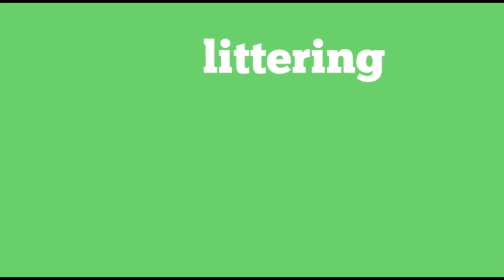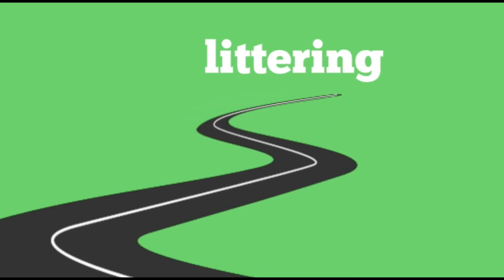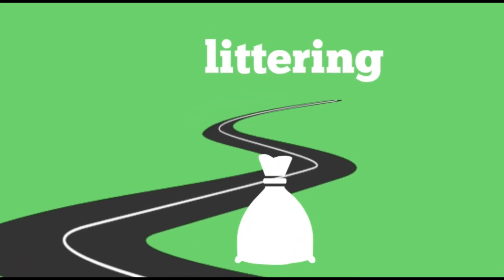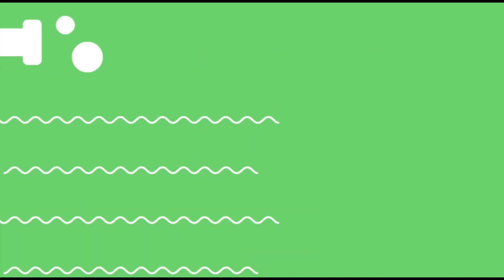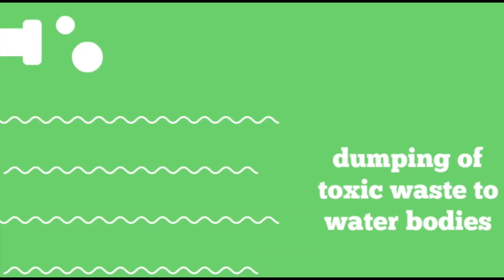Another thing that we are fond of doing is littering — everywhere, it's like we are leaving our footprints in the form of garbage. Industries are also fond of dumping toxic waste into the nearest water bodies. This action does not impact the biggest on aquatic animals, but on us humans.